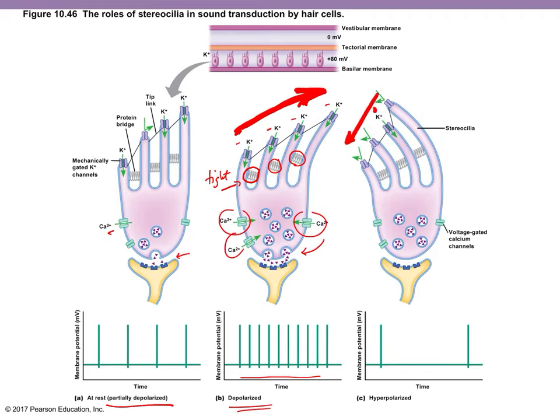If the stereocilia are bent in the opposite direction of the long one, the protein bridges become slack. The mechanically gated potassium channels close, causing hyperpolarization inside the cell and no action potentials. The endolymph is very rich in potassium, which is why there are so many potassium ions surrounding the stereocilia of the hair cells. This is the function of the organ of Corti — mechanical stress acting on those hair cells.